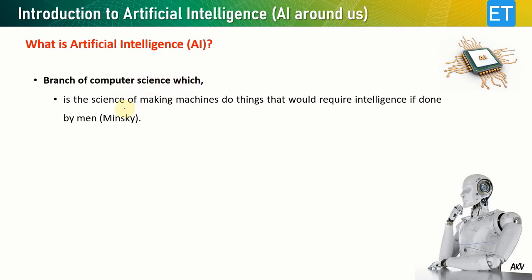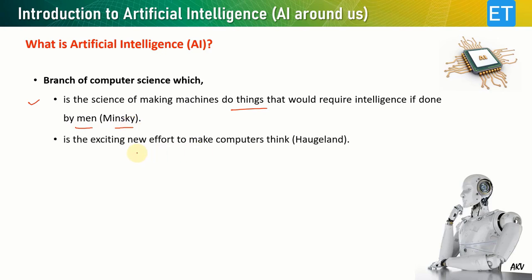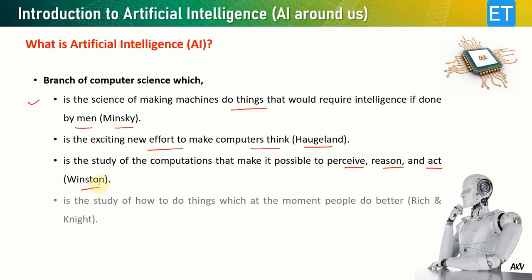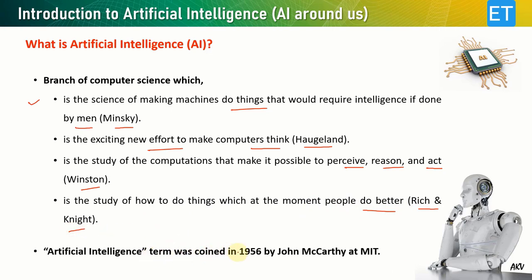AI is a branch of computer science — it's the science of making machines do things that would require intelligence if done by a human, as said by Minsky. It is the study of computations that make it possible to perceive, reason, and act, as said by Winston. The term artificial intelligence was first coined in 1956 by John McCarthy at MIT.